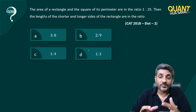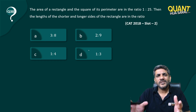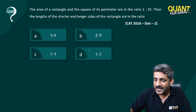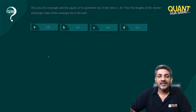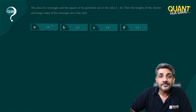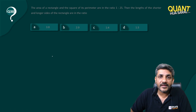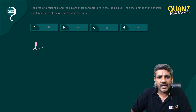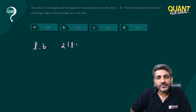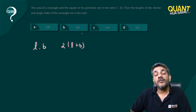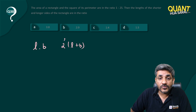Whenever I see a question which is not from arithmetic but can be done using aptitude, I always feel good about it. Most questions of arithmetic can actually be done this way. The area of a rectangle is l into b, and the perimeter is twice of l plus b.